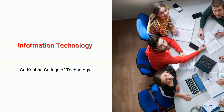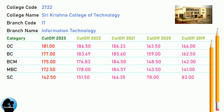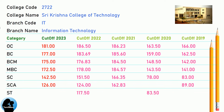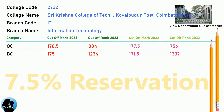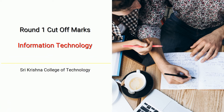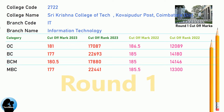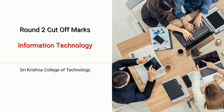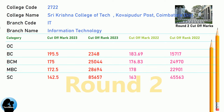BNEA 10.5 Reservation Cut-off for Shri Krishna College of Technology in Information Technology. BNEA 7.5 Reservation Cut-off for Shri Krishna College of Technology in Information Technology — multiple rounds covered.